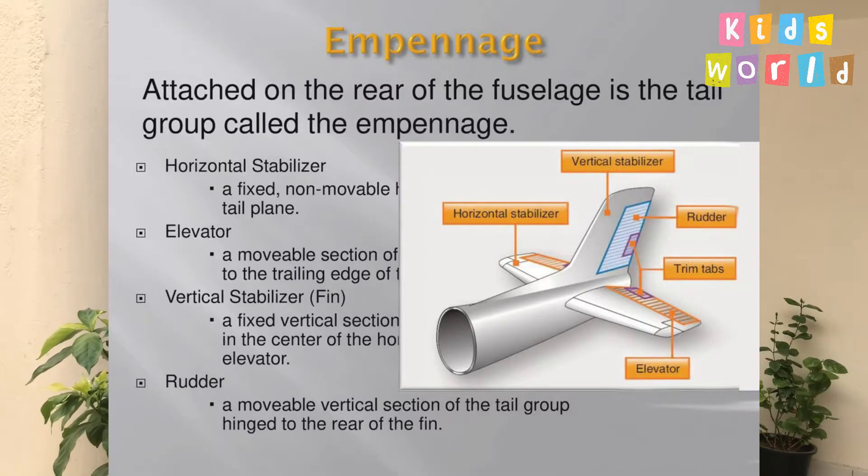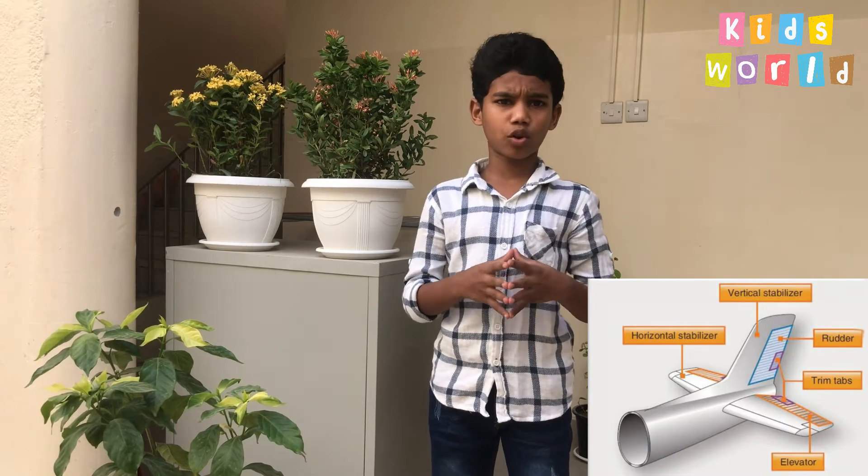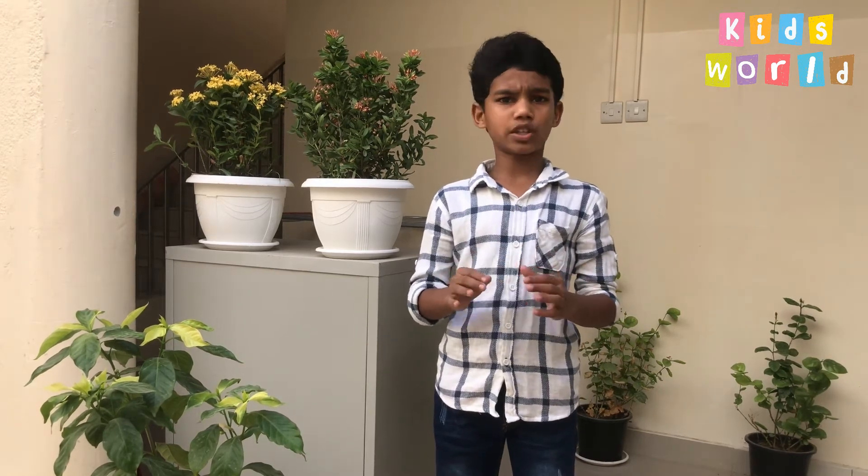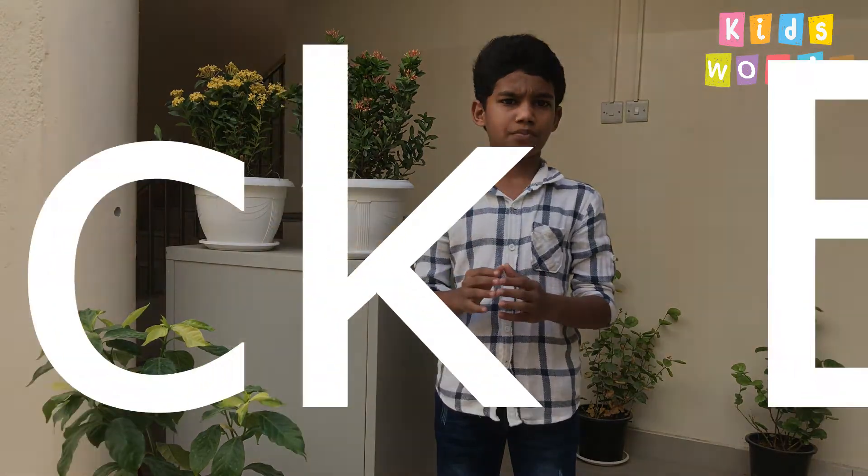A tail, also known as empennage or tail assembly, is a structure at the rear of an aircraft that provides stability during flight. Most aircraft feature an empennage incorporating vertical and horizontal surfaces which stabilize the flight dynamics of yaw and pitch, as well as housing control surfaces.